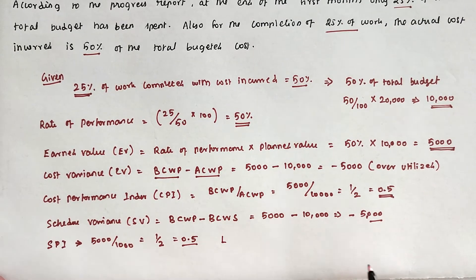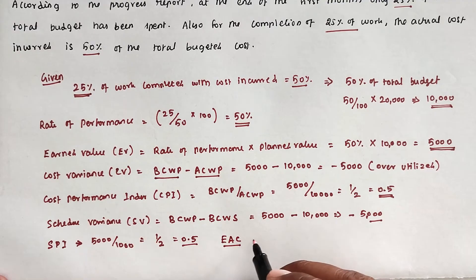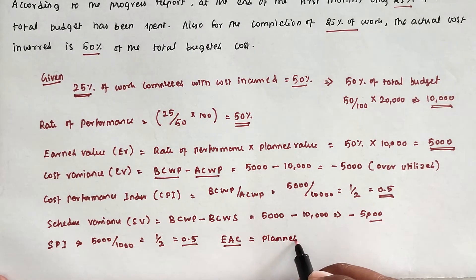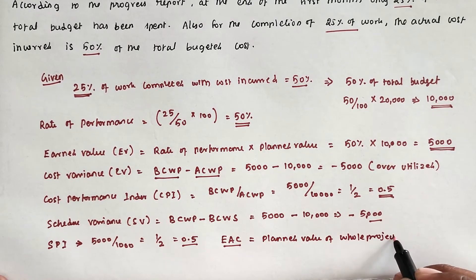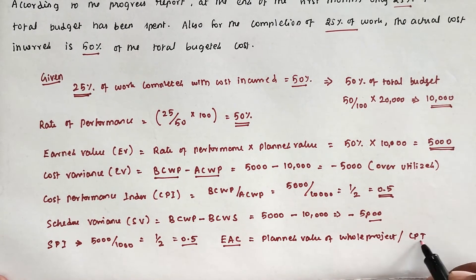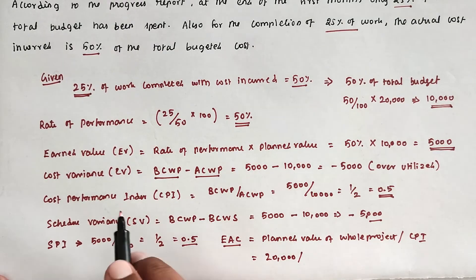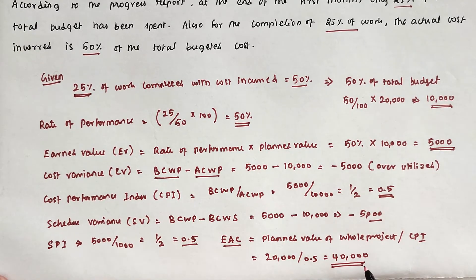Next is the Estimated Completion Cost. This is calculated as the Planned Value of the whole project divided by CPI = 20,000 divided by 0.5 = 40,000. So to complete the project, we would have to spend 40,000 because of low performance.